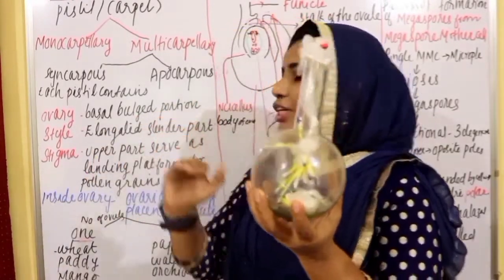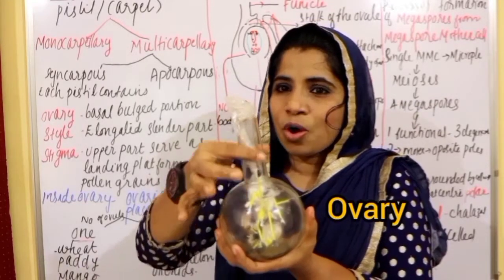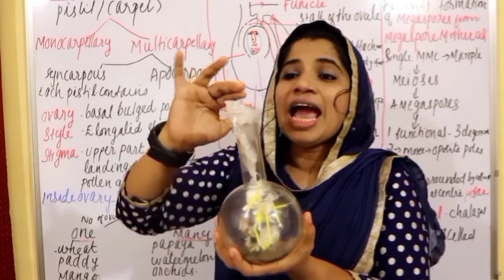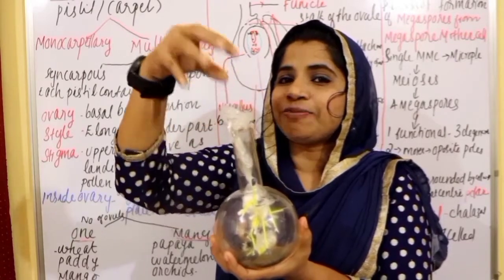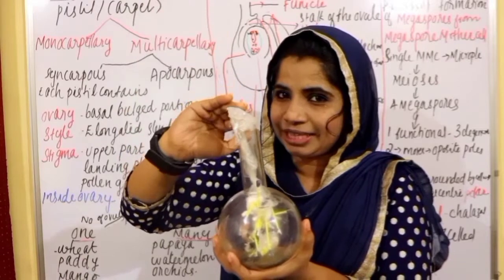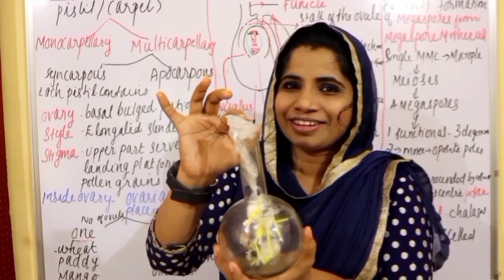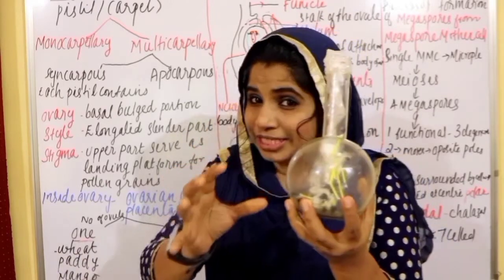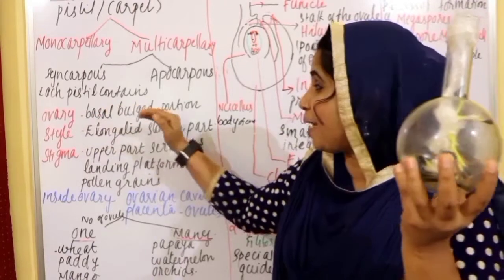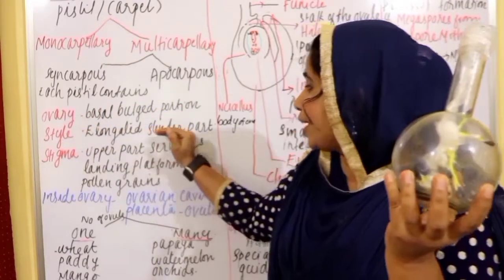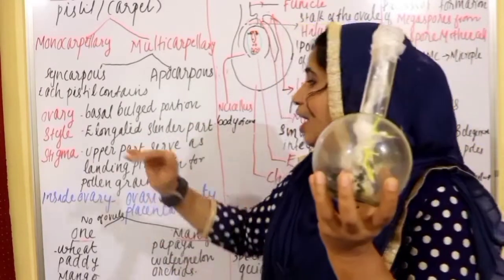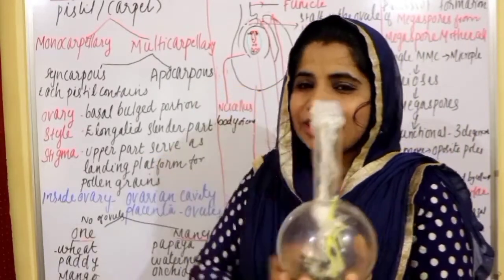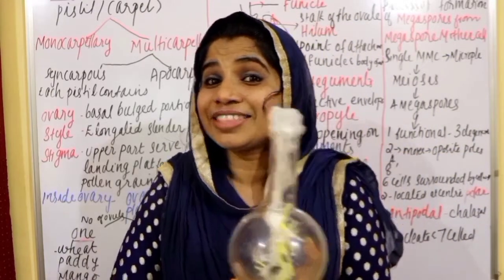The swollen basal portion is known as the ovary. Above the ovary, there is an elongated style. And the tip of the style is the stigma, which is the receptive surface for pollen grains — it serves as a landing platform for pollen.